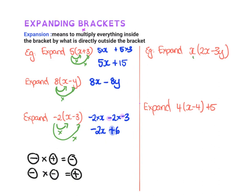So when we have the letters, we still do the same, but we will have x. So this first step, it'll be x times 2x. And then we're going to have plus x times negative 3y.